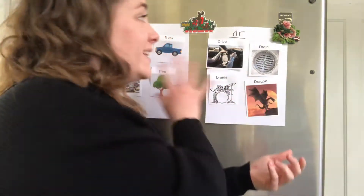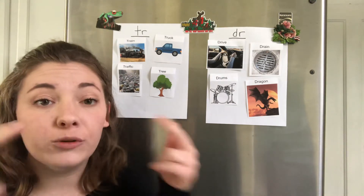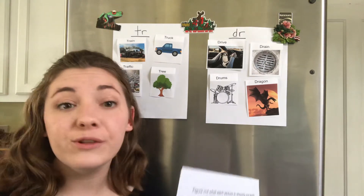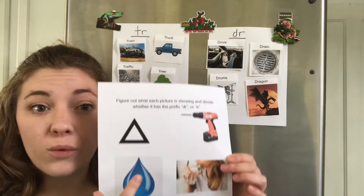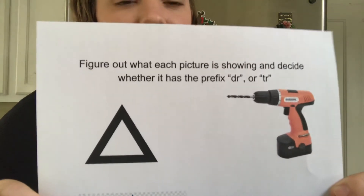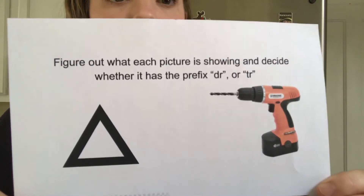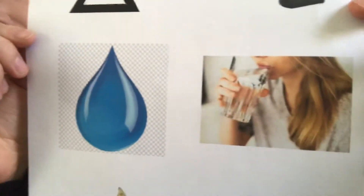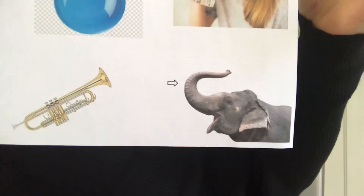So these are two blends that are really, really similar and sometimes really hard to tell apart. But since we're in second grade, we really need to start being able to identify them. So if you're interested, what you can do right now — I'm gonna show you a worksheet and you're welcome to print this out, or you can just look at it on the screen and pause it and try to figure out for yourself what each one of these pictures is showing. Each of these pictures either starts with a D-R or a T-R, so figure out what each picture is showing and decide whether it has the prefix D-R or T-R. Feel free to pause the video.